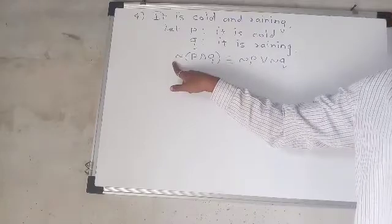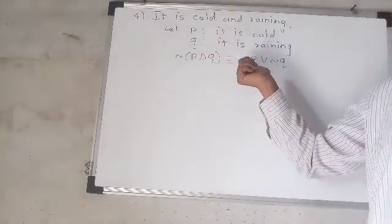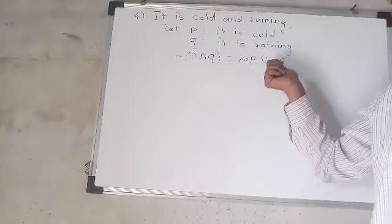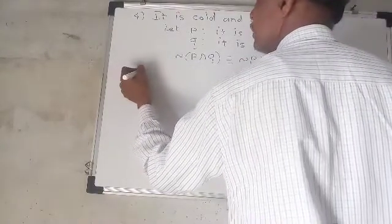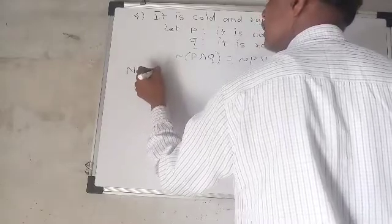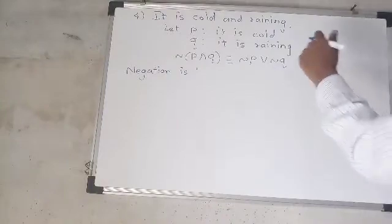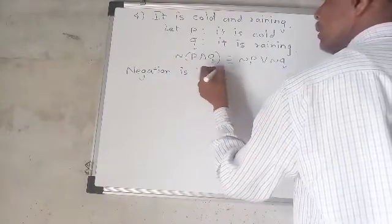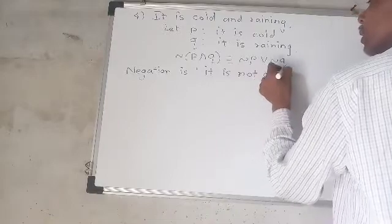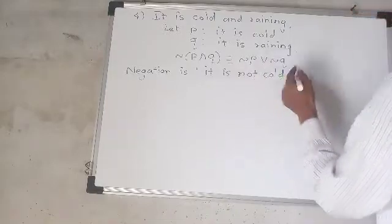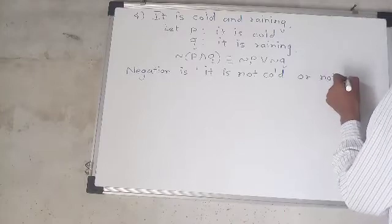Negation of (P conjunction Q) equals negation P disjunction negation Q. So negation P: it is not cold. Disjunction: negation Q — not rainy.